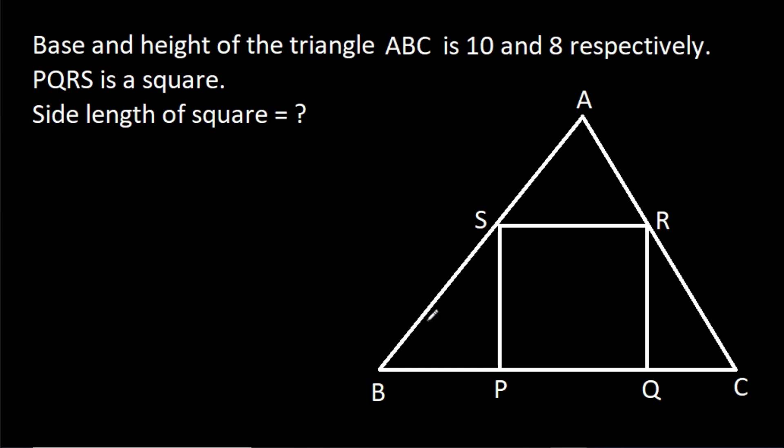In this video, we have been given that base of triangle ABC is 10 and height of triangle ABC is 8, and PQRS is a square. Then, we have to find side length of the square.